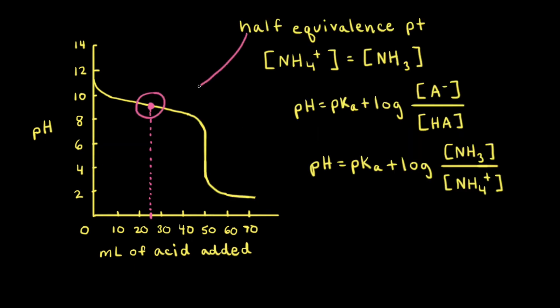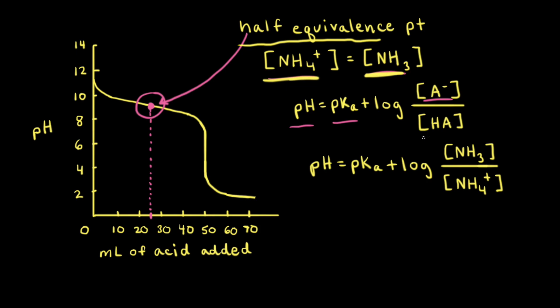At the half equivalence point, the concentration of the ammonium cation equals the concentration of ammonia. The ammonium cation and ammonia are a conjugate acid-base pair, and when significant amounts of both are present there is a buffer solution. Therefore at the half equivalence point we have a buffer, and we can calculate the pH using the Henderson-Hasselbalch equation: pH = pKa + log([conjugate base] / [weak acid]).